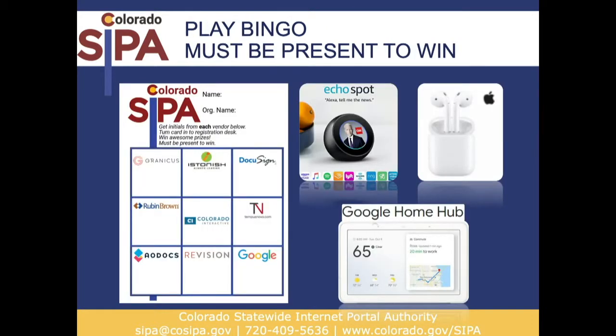Vendor bingo: you should get a form with nine vendors on it. We ask you to get a signature from each of those nine vendors. Then at our reception starting at 4:15, we will pull out one of those bingo cards. We have three awards this year: a set of Apple EarPods, an Echo Spot, and a Google Home Hub. Must be present to win, so come have an adult beverage with us — I think you'll enjoy the presentation.